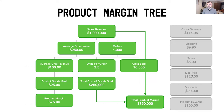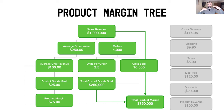We had an order that started off at $120. We took away a discount of $20 to arrive at $100 product revenue. From there we added in taxes and shipping to get to a gross revenue number. We've only been using the product revenue number in this margin tree. We took the sales revenue at the top of $1 million versus your orders of 4,000 to get an average order value of $250.